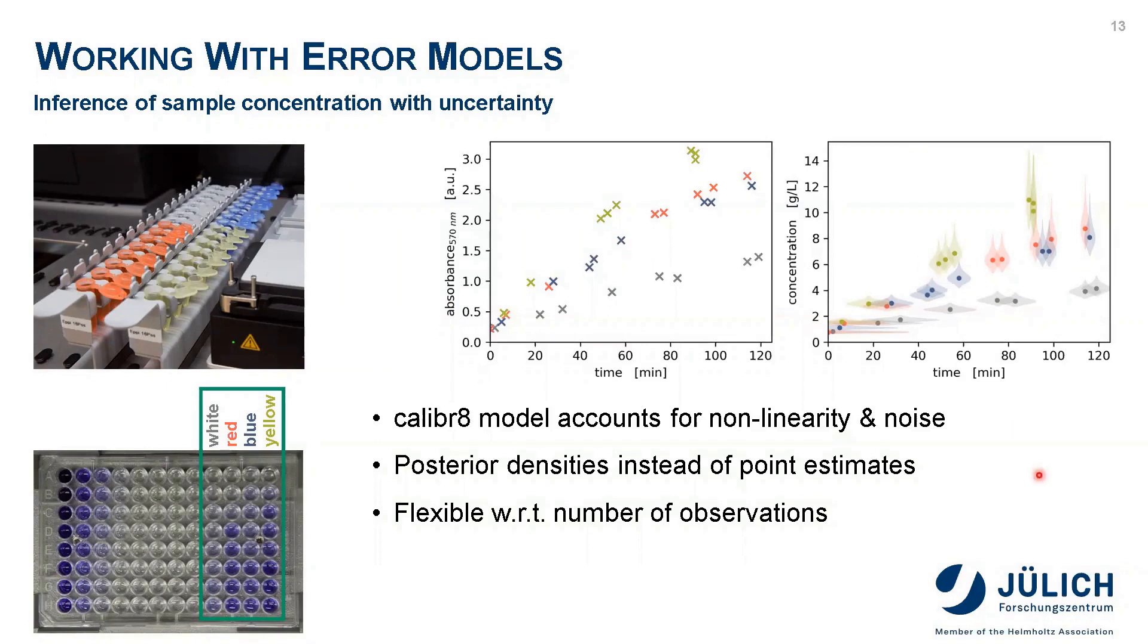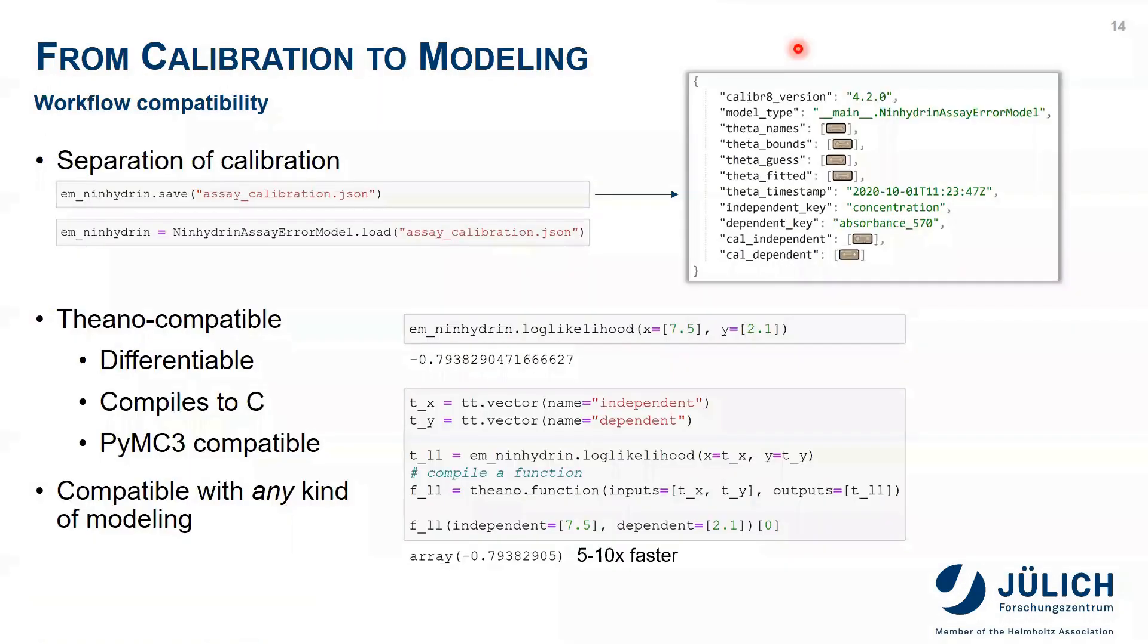Looking at the raw absorbance values, we can see this upward trend. With the infer-independent method, we can get posterior distributions for every single observation. To summarize this part, Calibrate models account for nonlinearity and noise, and we get posterior densities instead of point estimates. Also, they are flexible with respect to the number of observations. Furthermore, the predict-dependent and log-likelihood methods of Calibrate error models are fully compatible with Theano, and therefore also with PyMC3. They can be differentiated and compiled to C functions.